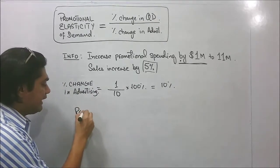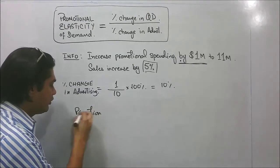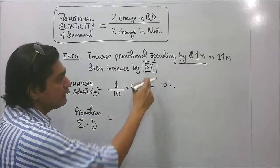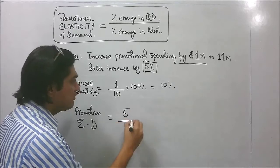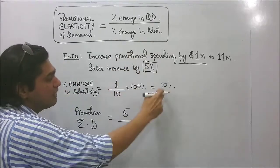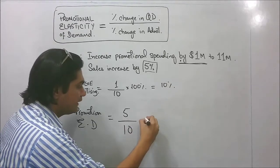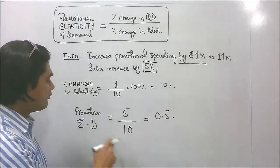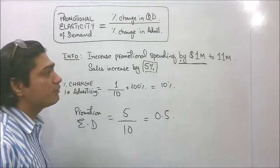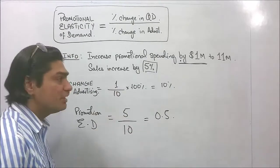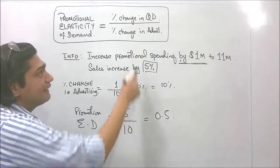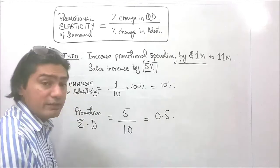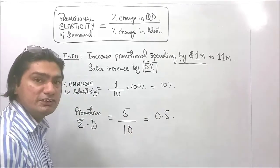So now calculating the promotional elasticity of demand, we simply take these values and put them in the formula. The percentage change in quantity demanded was 5%, divided by the percentage change in advertising which was 10%. This gives us a value of 0.5. This indicates that 0.5 is the promotional elasticity of demand for this company, and whenever they increase their advertisement, their sales are increasing by 5% as a result.